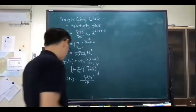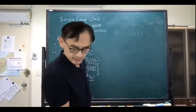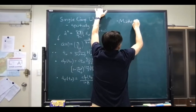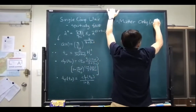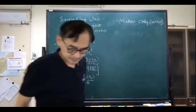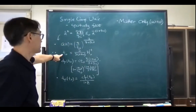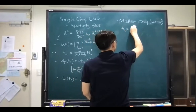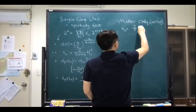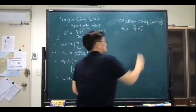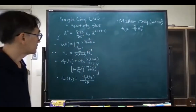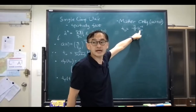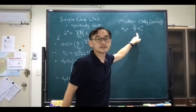Let's start with the matter-only universe. This is w equal to zero. From here, what we know is t₀ is now two-thirds H₀ inverse. So the age of the universe is smaller than the Hubble time by this amount — that's how we interpret this.